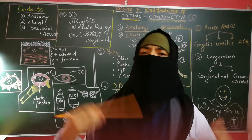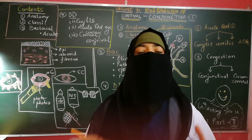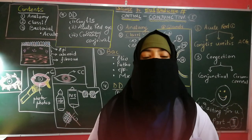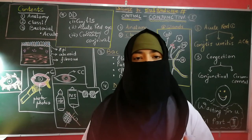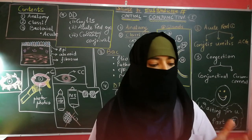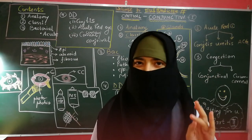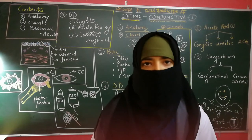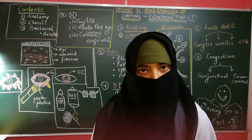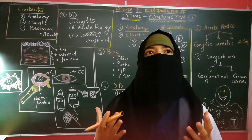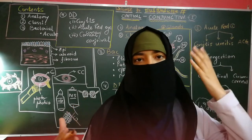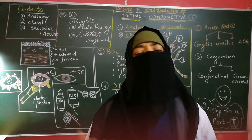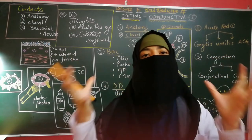Iris is normal in conjunctivitis, muddy in uveitis, and edematous in ACG. To summarize the acute red eye comparison: assess onset, pain, vision, colored halos, discharge, type of congestion, then proceed from anterior to posterior — anterior chamber, iris, pupil, and intraocular pressure — to differentiate between these three conditions.